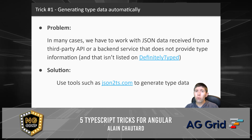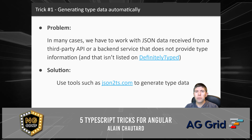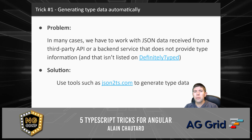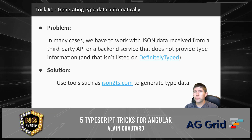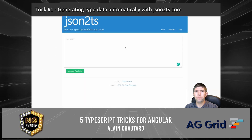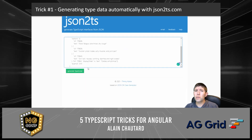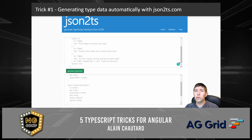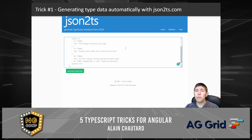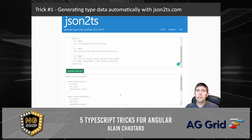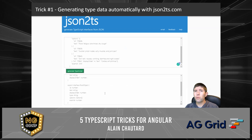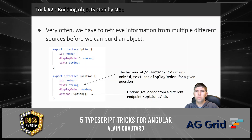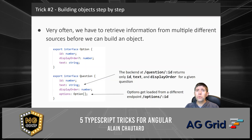Trick number one is for when we have to work with JSON data received from a third-party API or a backend service that does not provide type information. The idea is to use tools to generate type data, because types are really one of the best features of TypeScript. With json2ts.com you can copy-paste your JSON, click one button, and you get interfaces with the proper types inferred, including properties that are optional and even nested objects.